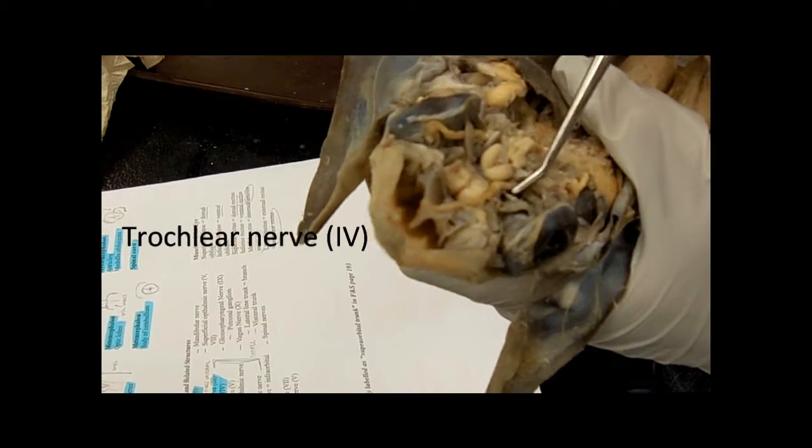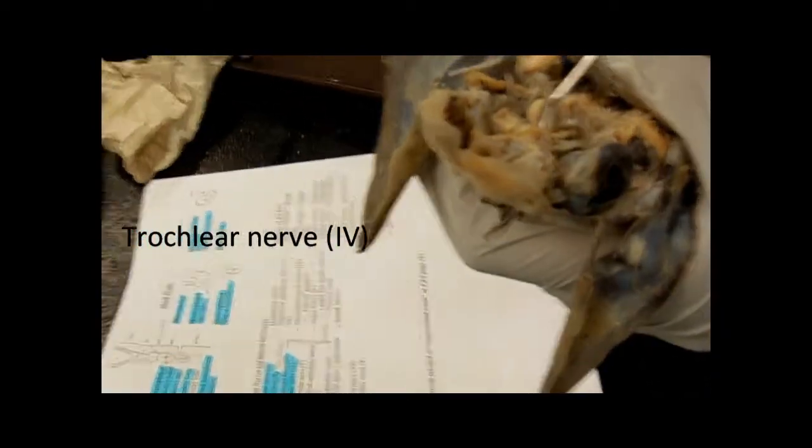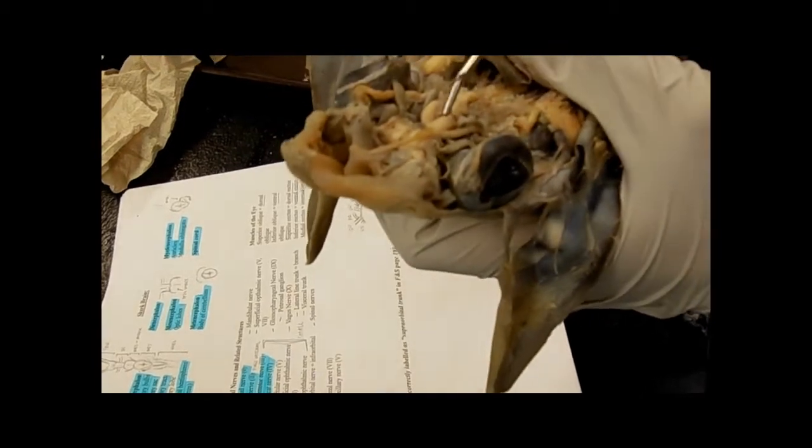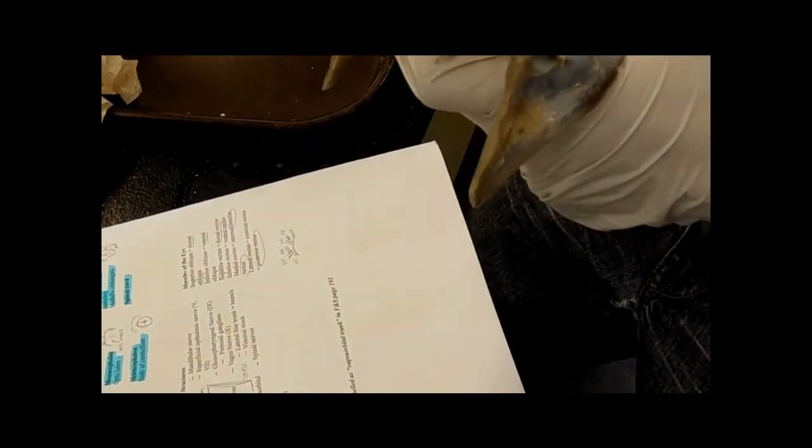So those are the muscles. Like this one's important, this is the trochlear nerve that I already kind of fucked up. It branches right off to the superficial ophthalmic.